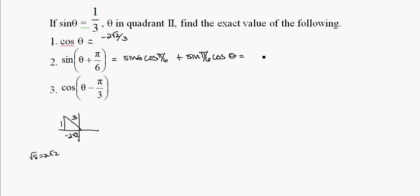It's cosine of pi over six plus the sine of pi over six cosine of theta. So the sine of theta is equal to one third times pi over six, which is radical three over two, plus the sine of pi over six, which is a half, times the cosine of theta, which is negative two radical two all over three. And if I simplify, I get radical three minus two radical two all over six.